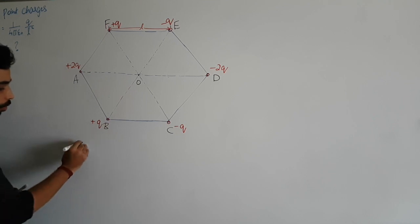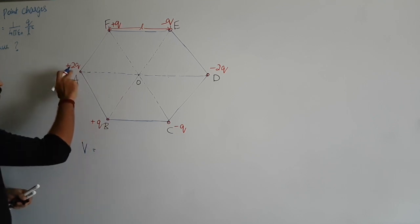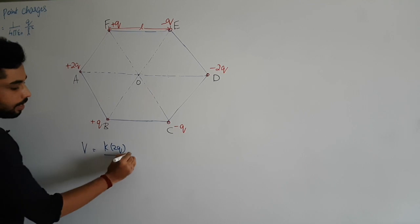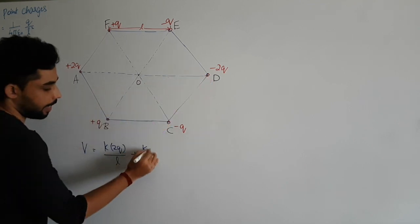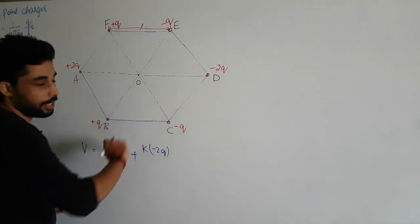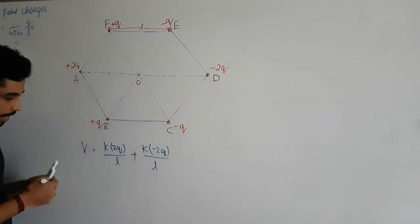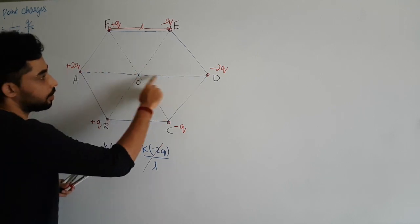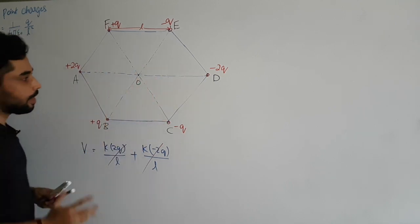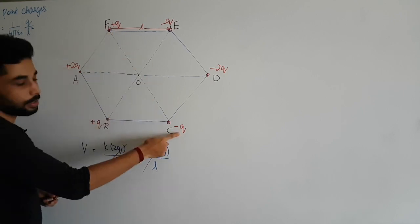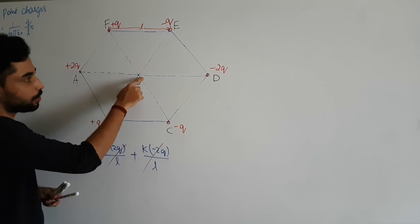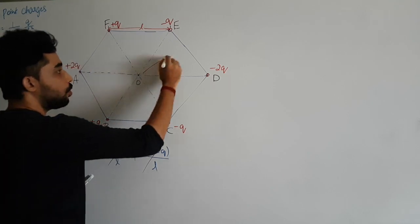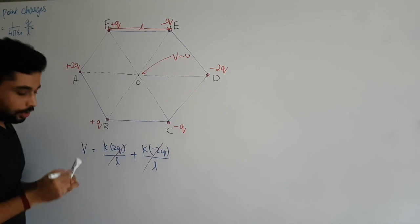To find the potential at O: the potential due to plus 2q is k times 2q divided by L, and due to minus 2q it is negative k times 2q divided by L. These are equal and opposite and cancel. Similarly, plus q and minus q cancel, and the remaining pair also cancels. So the total potential at O is zero, and the second statement is true.